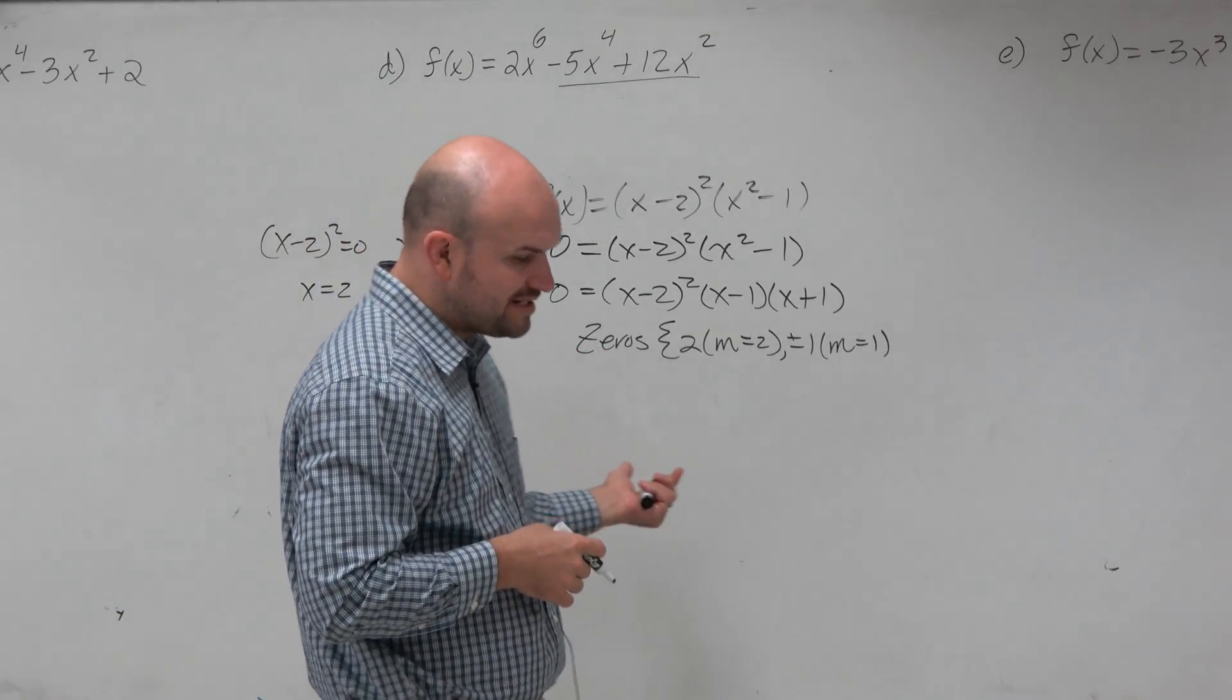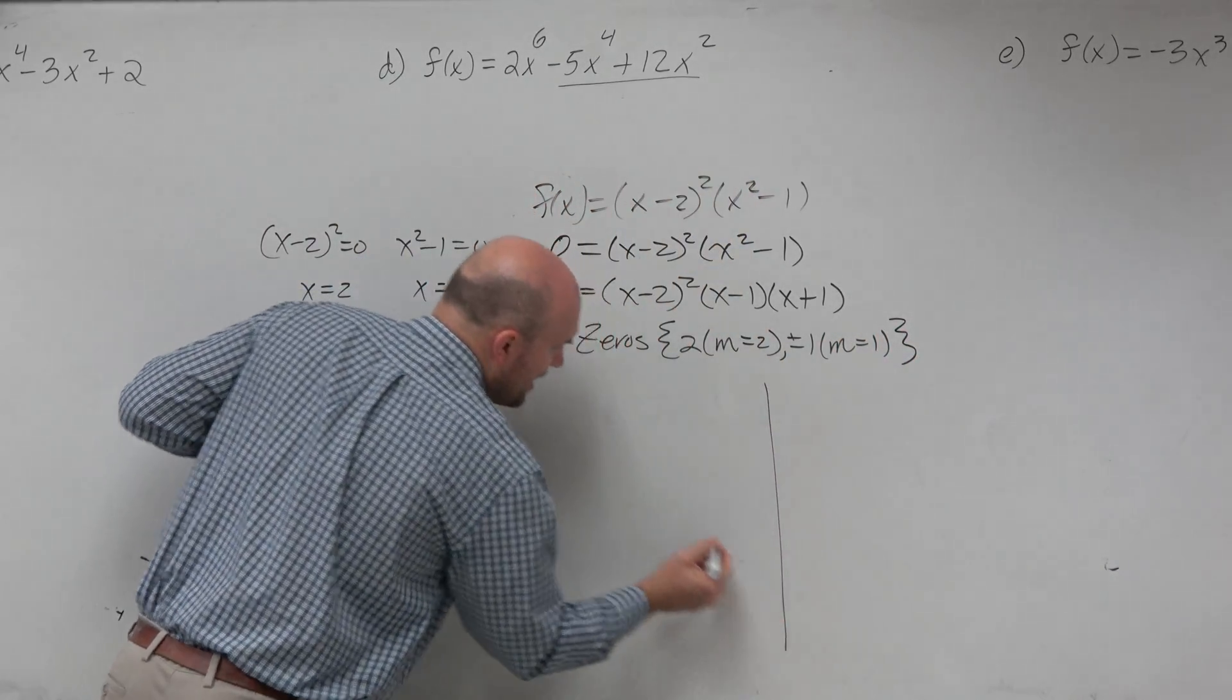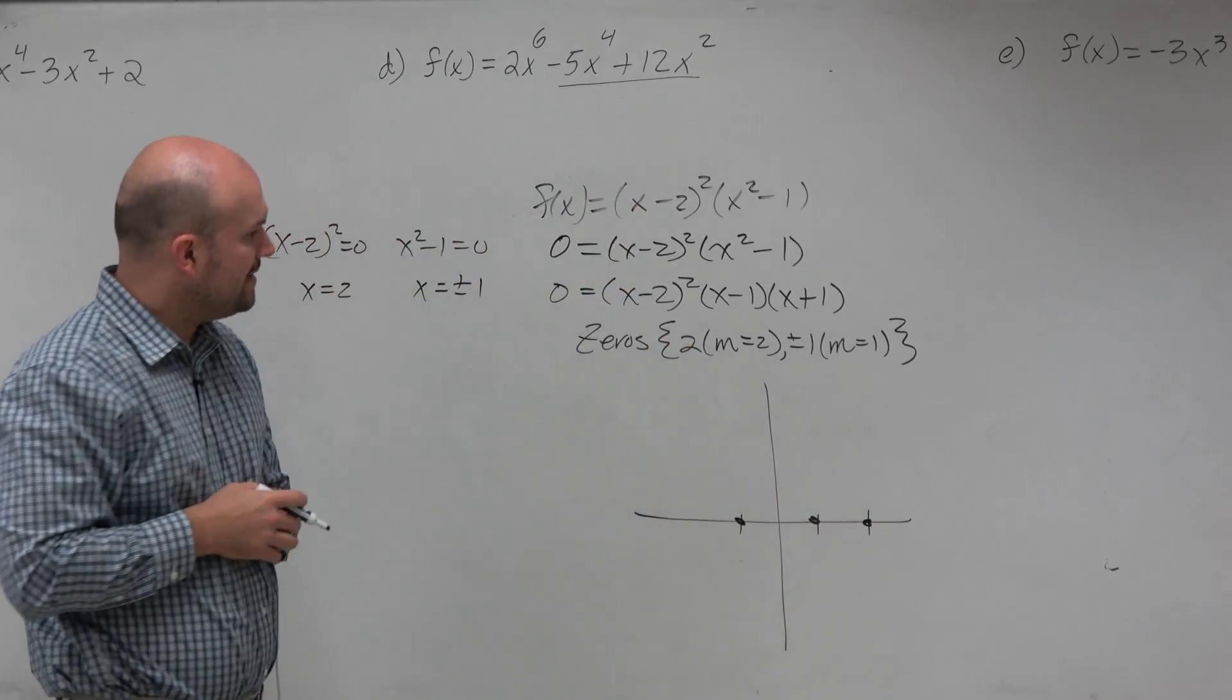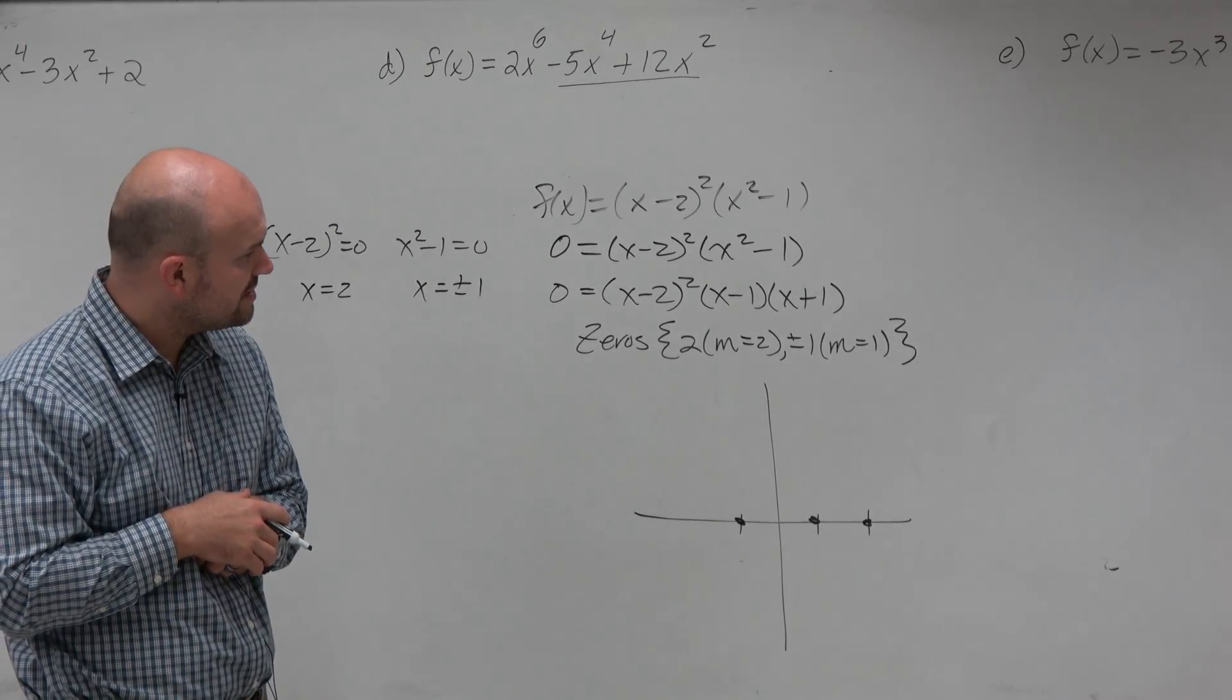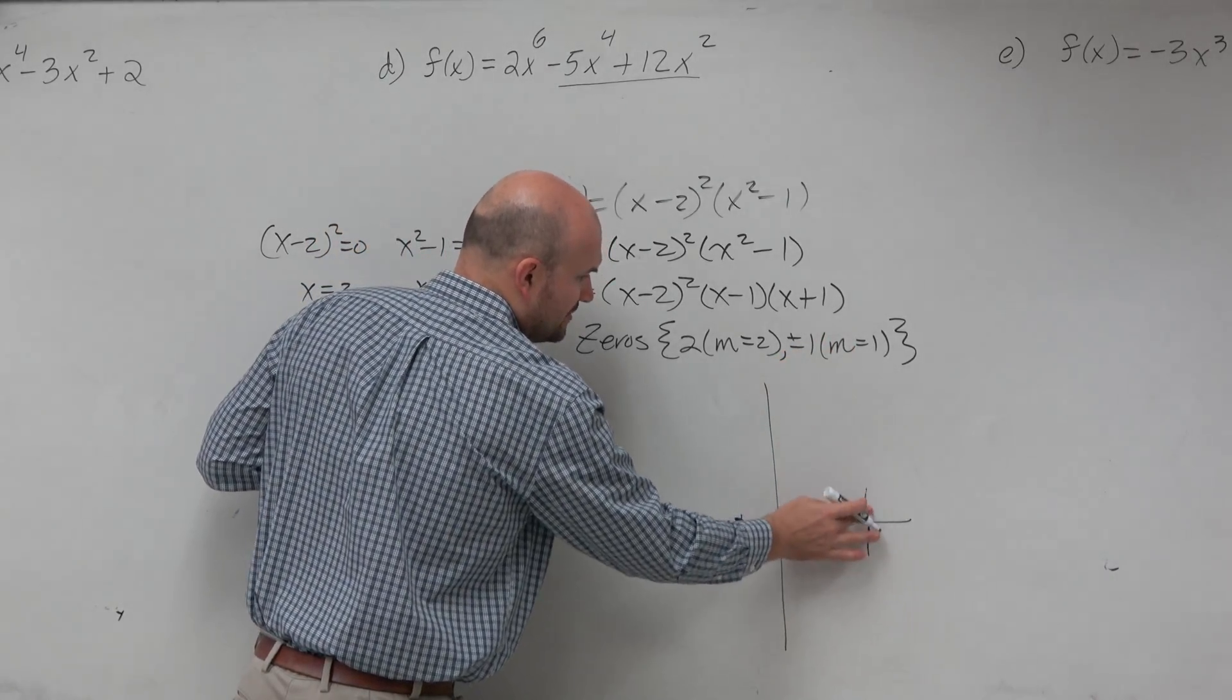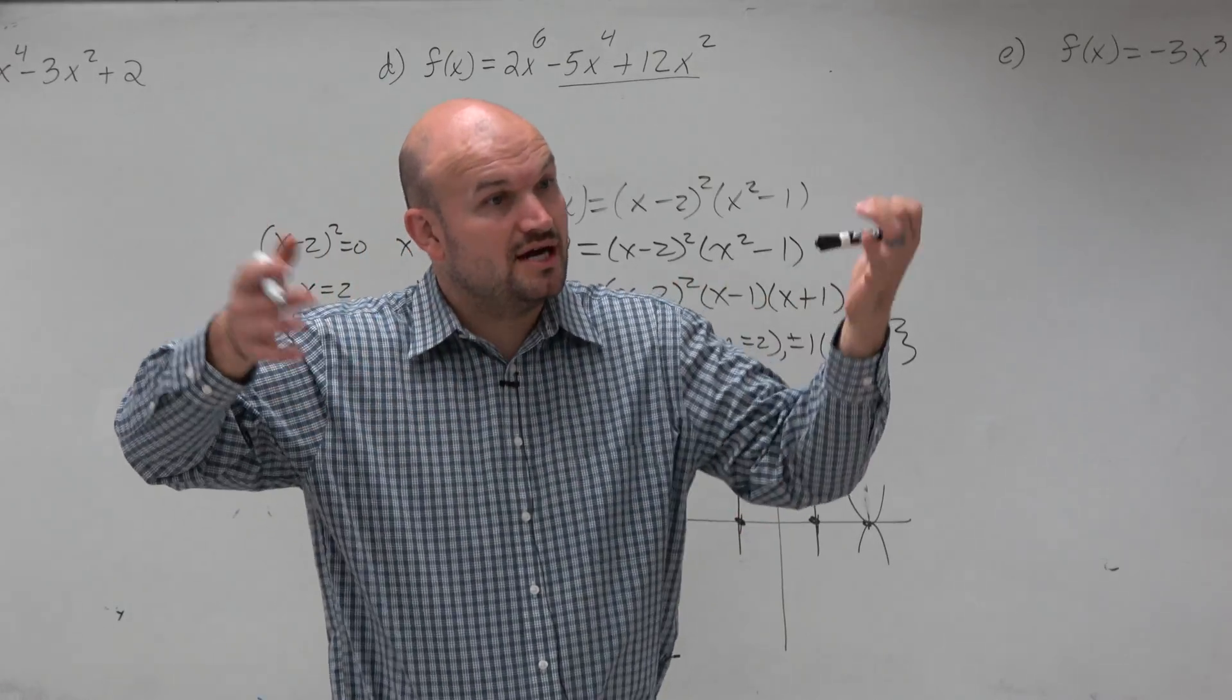Now, we looked at that information and what we said is, from that information, we could also identify what the graph is going to look like. So from the graph, we can say there is a 0 at plus or minus 1 and there's a 0 at 2. And when we're looking at this, we look at the multiplicity to identify how does that function behave at that 0? When it's odd multiplicity, the graph is going to cross. And when it's even multiplicity, the graph is going to bounce.